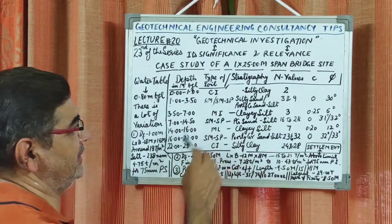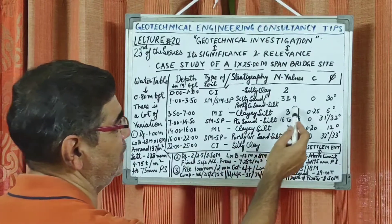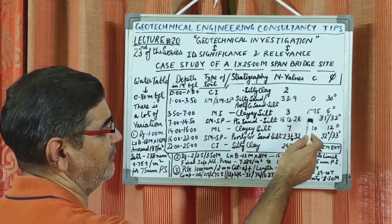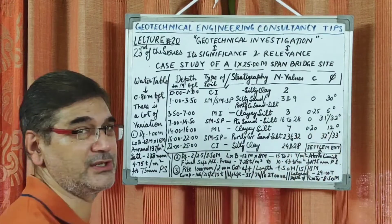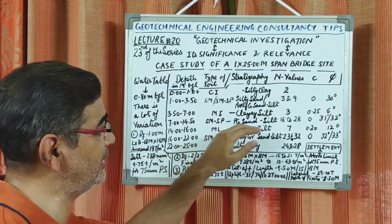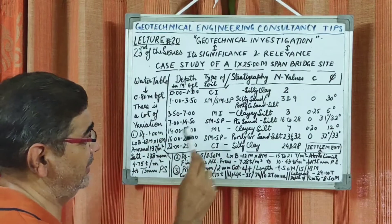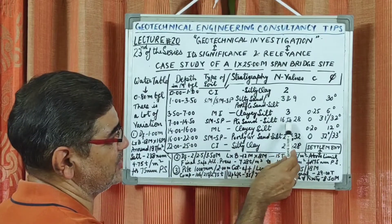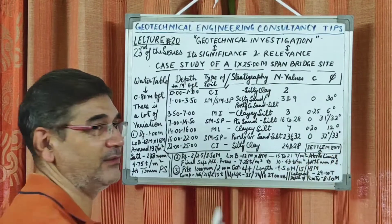From 3.50 meter to 7.00 meter depth, a very loose clay was encountered. This high plasticity classification soil had an N value of 3 — the standard penetration test value again decreased — and cohesion was 0.25 kilogram per centimeter square with an angle of 6 degrees. Then again the strata changed into a sandy mixture from 7 meter to 14.50 meter depth below ground level, having SM-SP group of highest classification with N values steadily increasing from 16 to 28, cohesion being 0 and angle of internal friction 31 to 32 degrees.